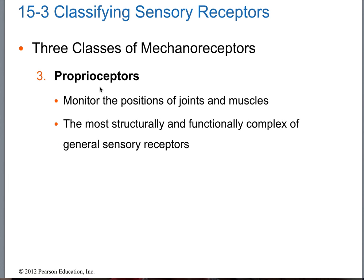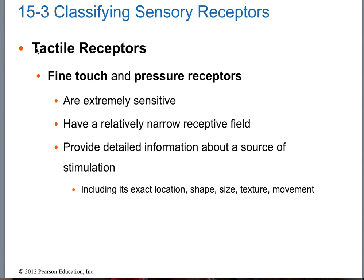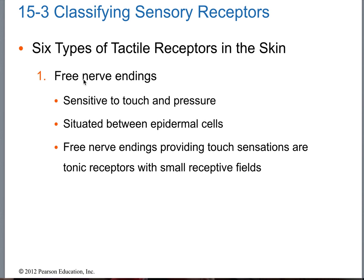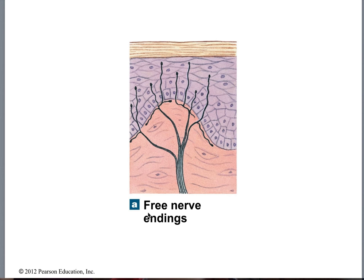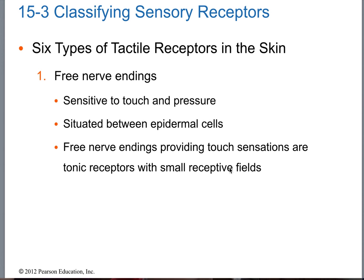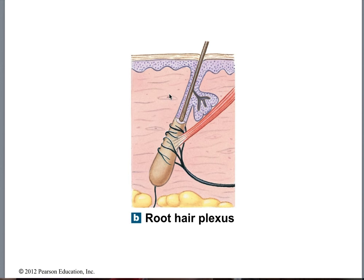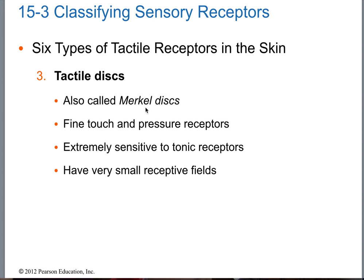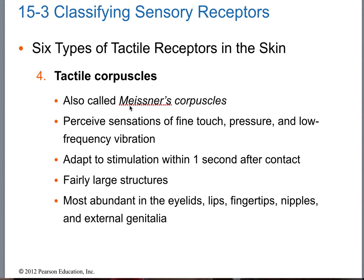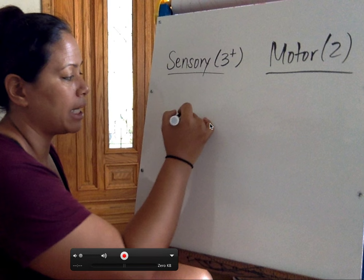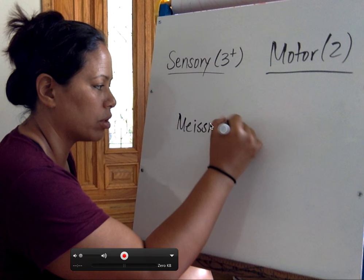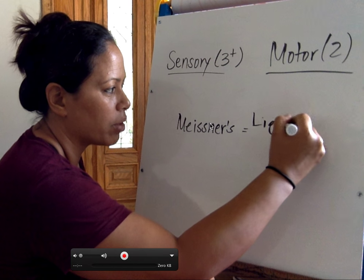There are actually three types of proprioreceptors, but memorize the two I keep repeating. Tactile receptors — fine touch and pressure receptors — and there's also crude touch. Remember: fine touch or two-point discrimination versus crude touch, and six types overall. Free nerve endings: memorize that these are pain receptors. Merkel's discs we covered in skin. Meissner's — we want to know light touch. These are the key words I will use on the exam.